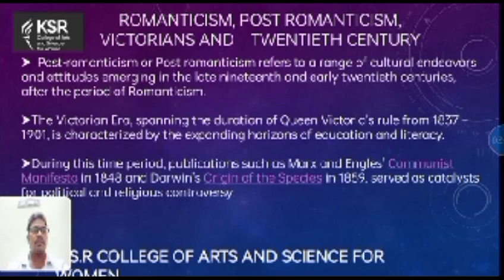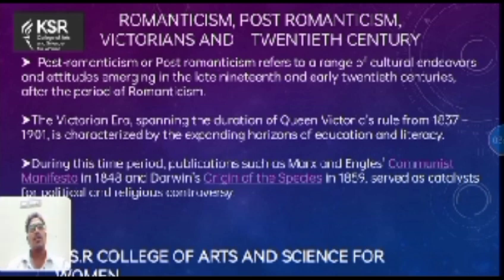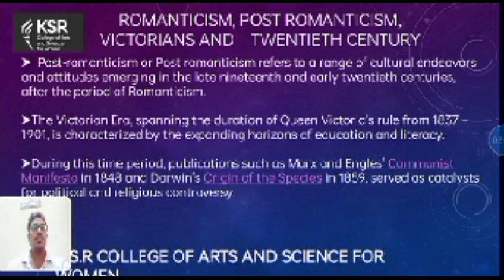The next topics are Romanticism, Post-Romanticism, and the Victorians in the 20th century. Post-Romanticism refers to a range of cultural endeavors and attitudes that emerged in the early 19th and early 20th century after the period of Romanticism — it essentially marks the end of Romanticism. The Victorian era spanned the duration of Queen Victoria's rule from 1837 to 1901, and was specially characterized by the expanding of horizons, education, and literature. In the Victorian era, education and literacy policy were taken up in a serious manner, and so translation also took place on a wide and serious scale.